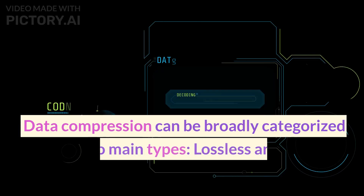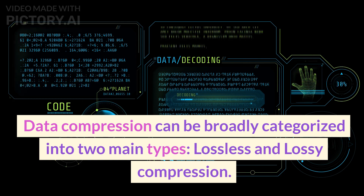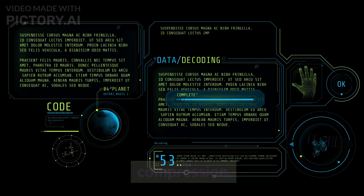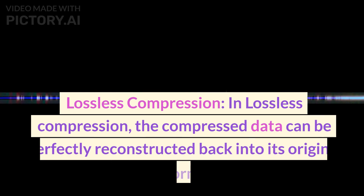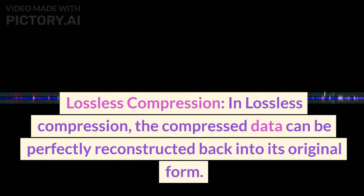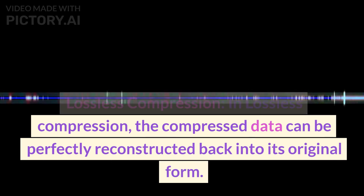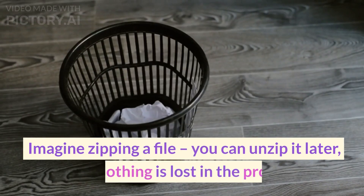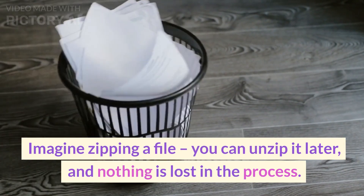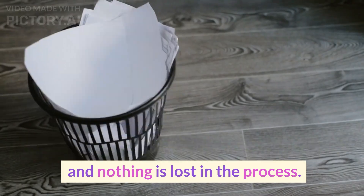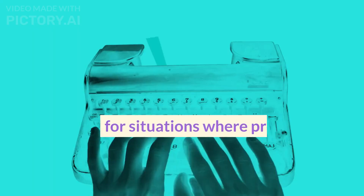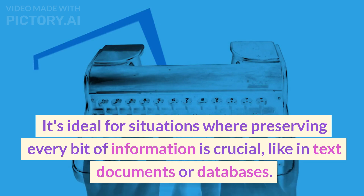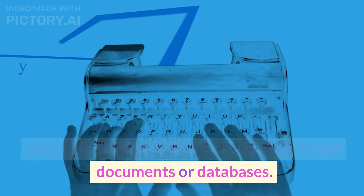Data compression can be broadly categorized into two main types: lossless and lossy compression. In lossless compression, the compressed data can be perfectly reconstructed back into its original form. Imagine zipping a file — you can unzip it later and nothing is lost in the process. It's ideal for situations where preserving every bit of information is crucial, like in text documents or databases.